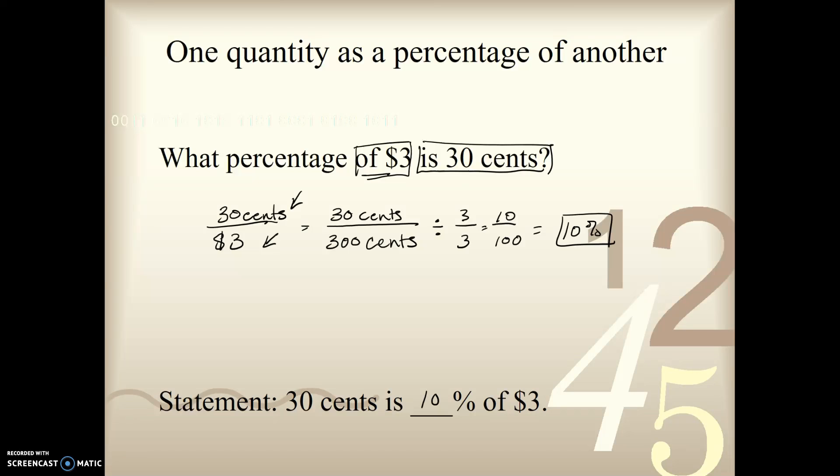Now, notice that down here for my statement, I went back, and I used the original quantity here, didn't I? The unconverted quantity. And that's the way we want it, because we're answering this question up here. So we should use that $3 and not 300 cents.